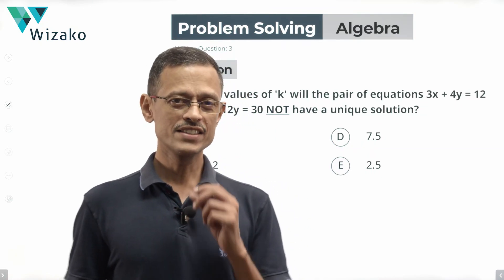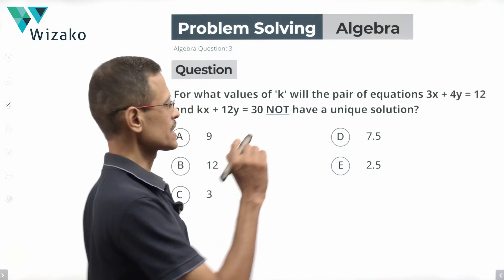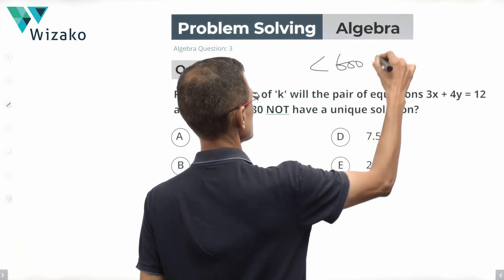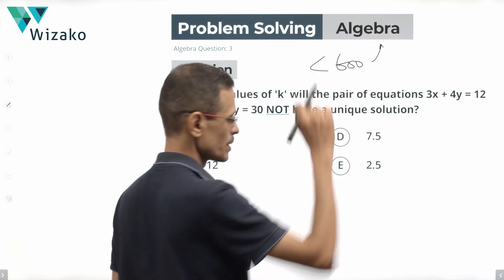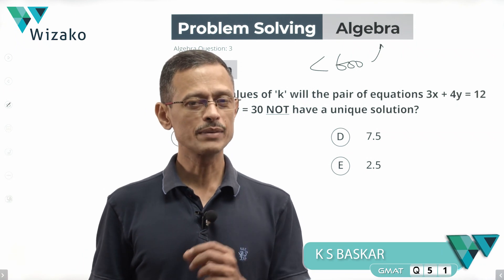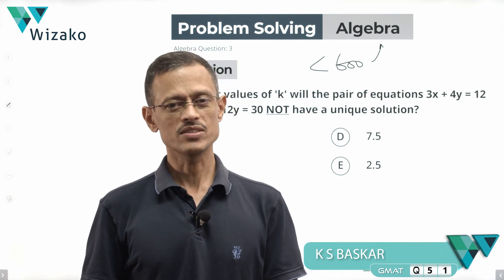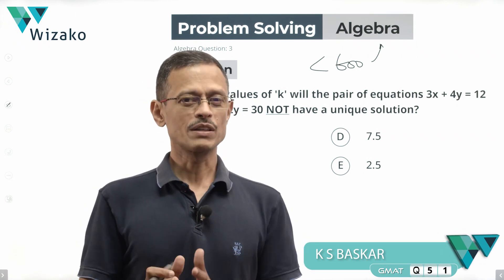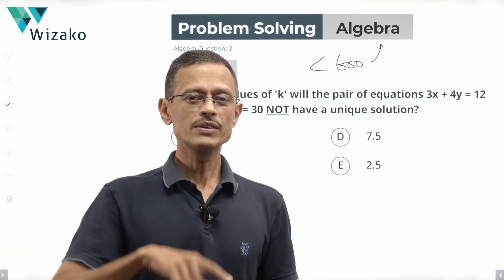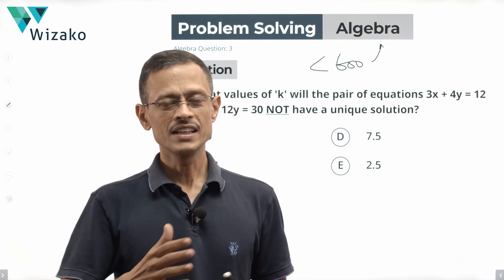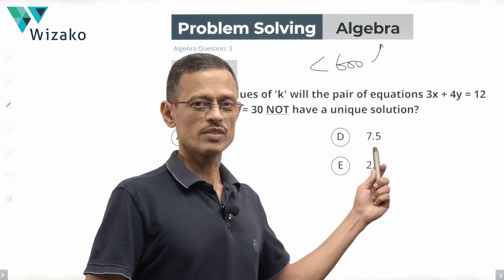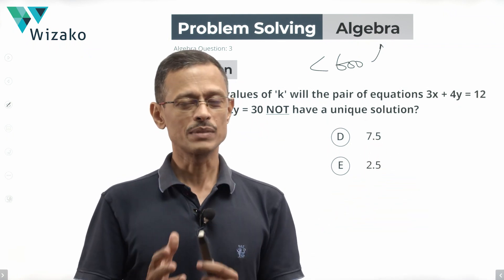Hi everyone. This is a very easy question. I'll classify it as a GMAT sub-600 level problem-solving question in algebra. Within algebra specifically, we'll be looking at a pair of linear equations in two variables. The question is simple, but what we're going to do in this video is look at the theory behind it. There is a condition we need to know to solve this question in under half a minute.